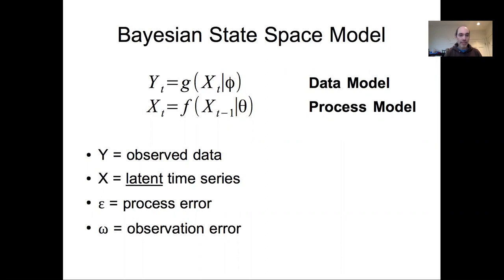Then we have a latent process model. That latent process model is a dynamic model, such that the state of the system now is a function of the state of the system in the past, either the immediate past or multiple lags. In doing so, we have to account for both the process error in the process model and the observation error in the data model.